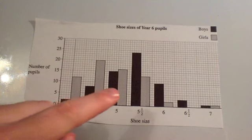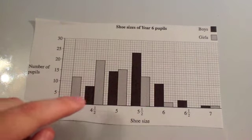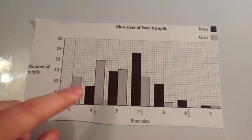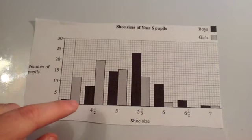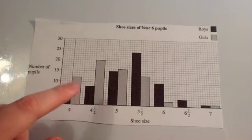The darker ones are the boys — we'll call them the black ones — and the grey bars are for girls. You'll see there's a small number of boys with size 4 and more girls with size 4, and so on.